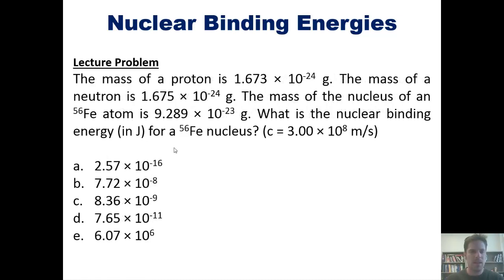Now another problem. The mass of a proton is this number. The mass of a neutron is this number. The mass of the nucleus of an iron-56 atom is this number. What is the nuclear binding energy in joules for an iron-56 nucleus, keeping in mind that the speed of light is this number? I'm not going to do this problem for you, but I invite you to attempt it on your own.